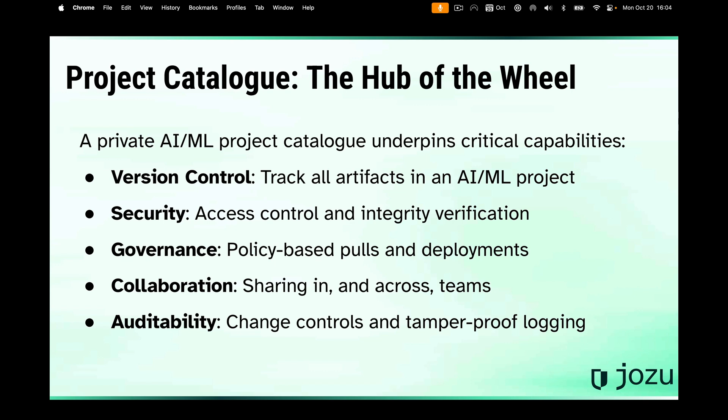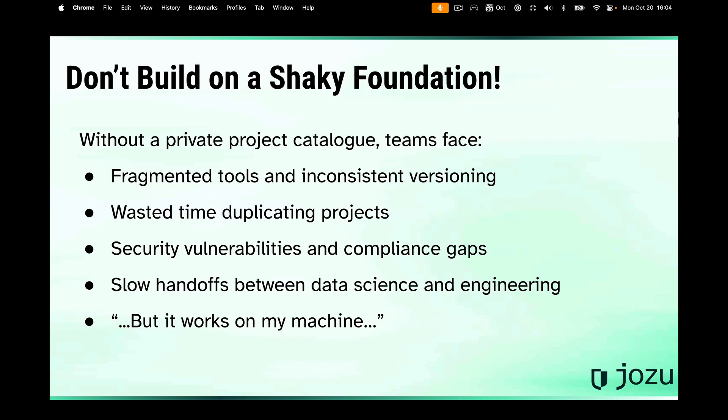For folks doing fine-tuning, especially in security-sensitive environments, you really need to have a private AI/ML project catalog, because that's where you're going to do your version control, have a point of logging or reporting for your security, policy-based pulls and deployments, and collaboration so teams can still move quickly. It's typically also where you do your auditability — your single source of truth. Right now in the market there are a lot of fragmented tools and inconsistent versioning. A lot of organizations have multiple tools for housing different types of artifacts: models in S3, data in parquet files in a data lake, code in Git, docs in a wiki — all separately versioned, but often held together by spreadsheets or tribal knowledge.